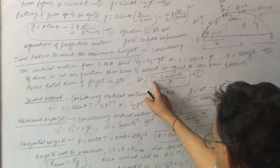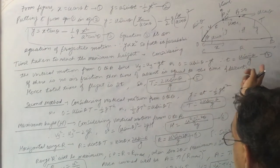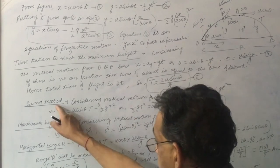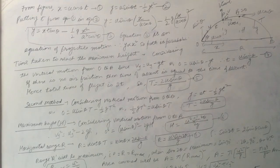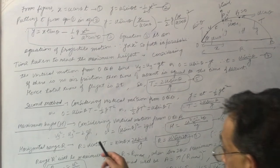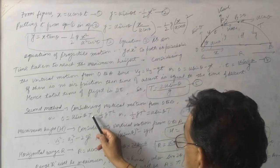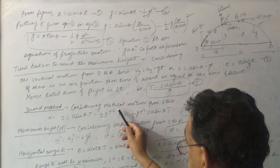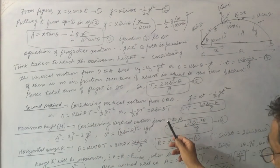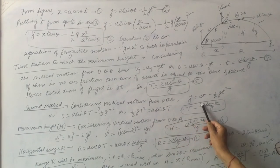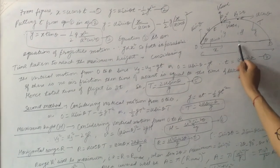Total time of flight T = 2u sin θ / g. A second method: setting y = 0 for the full flight using y = u sin θ · t − ½gt², cancelling one t gives T = 2u sin θ / g — the standard formula.